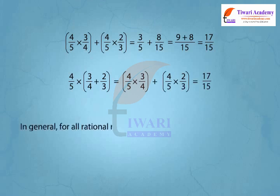In general, for all rational numbers a, b, and c: a into b plus c is equal to a into b plus a into c.